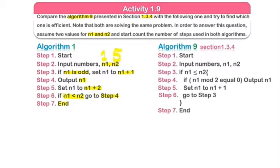Algorithm one takes only ten steps to show the even numbers from one to five. Now we will check algorithm nine. Go to section 1.3.4. We take start, then enter input: n1 is one (starting), n2 is five (ending). If n1 is less than or equal to n2 — equal to five or less than five — we divide: if n1 mod two equals zero, display output n1. Then set n1 to n1 plus one and go to step three.